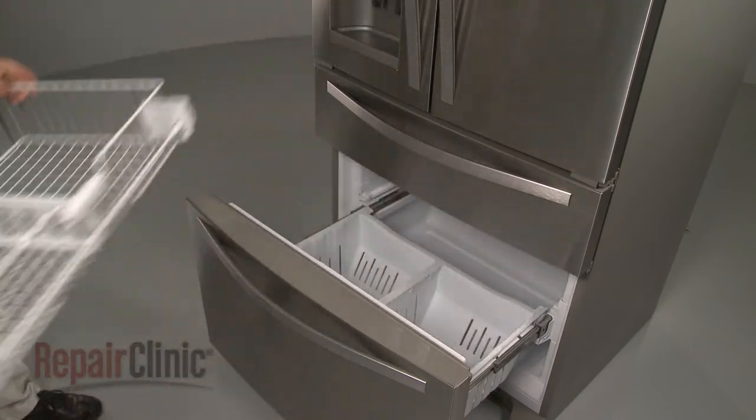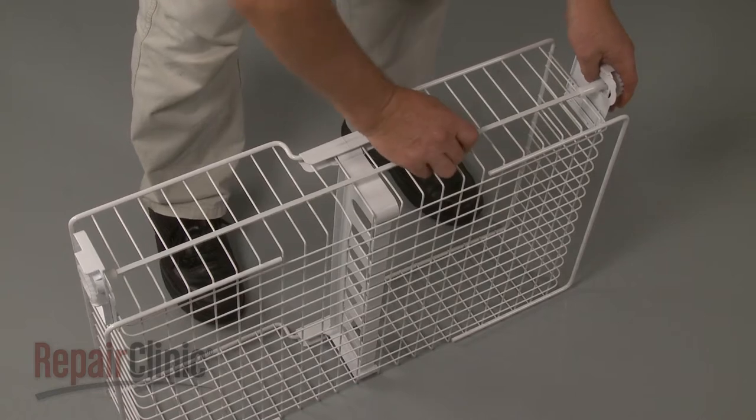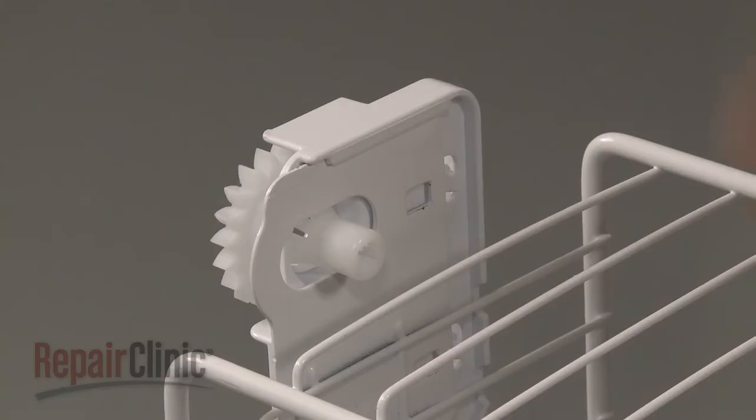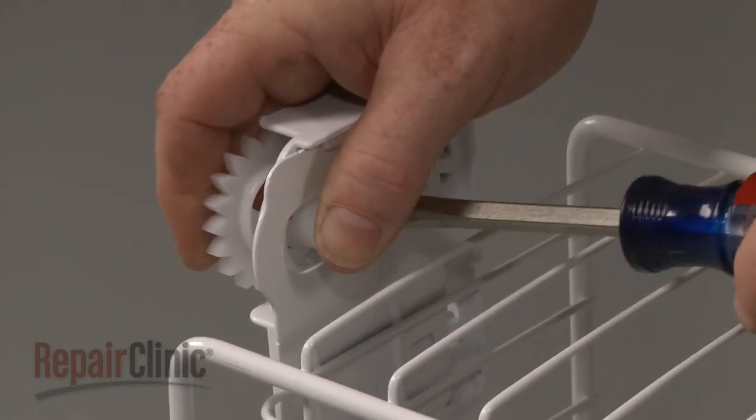Set the rack on a sturdy surface and slide the support rod out of the short stem gear to remove it. Use a small flathead screwdriver to depress the retaining tabs to detach the old gear.